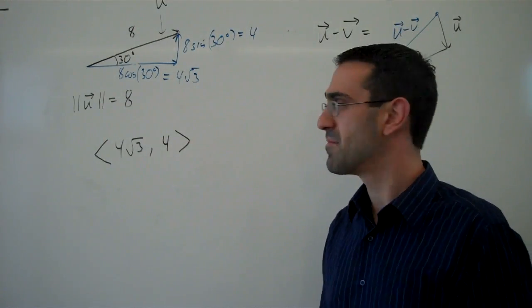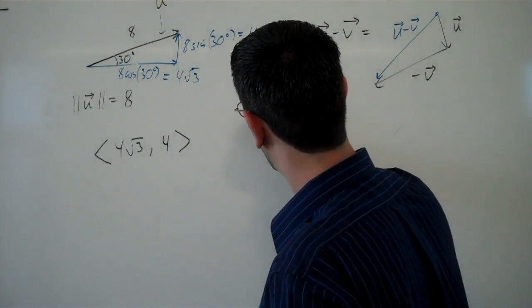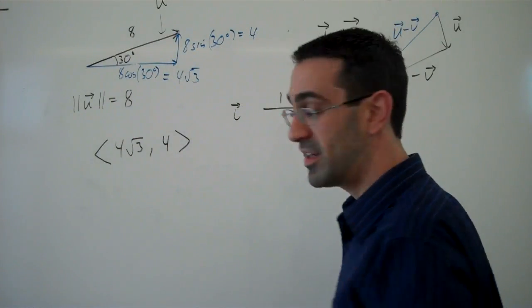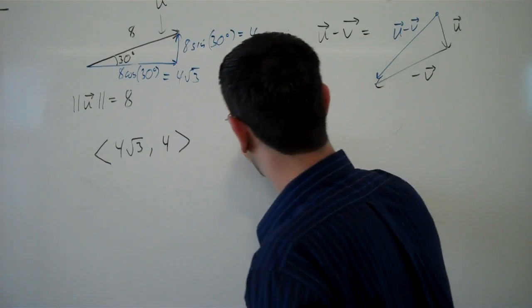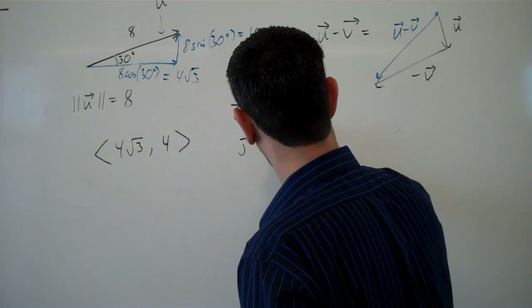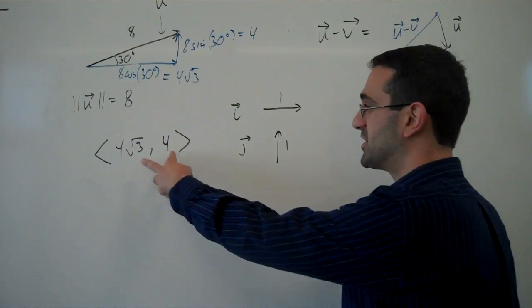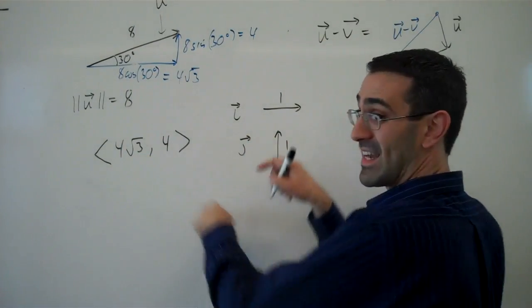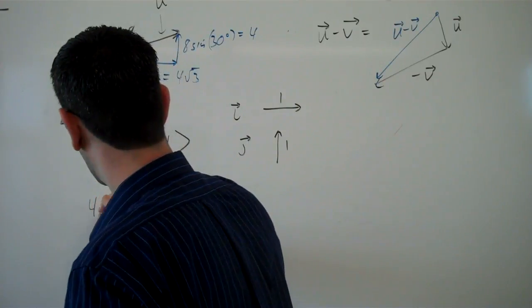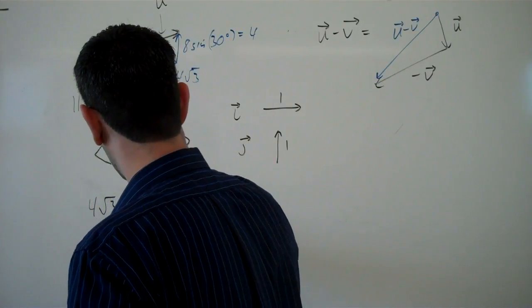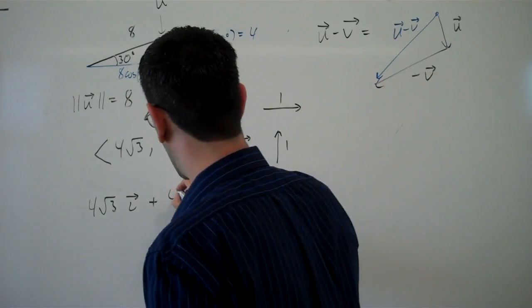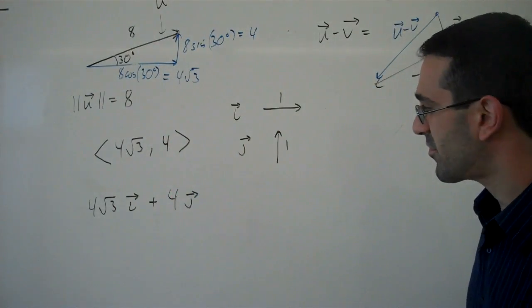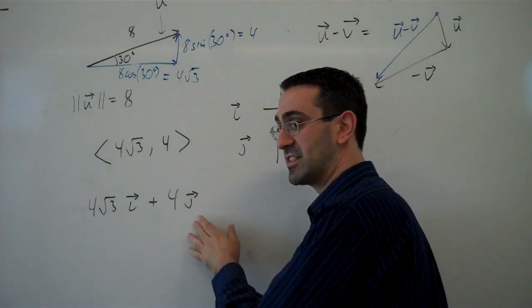Sometimes you'll also see i and j used, where i vector is the vector with length 1 pointing to the right, and the vector j is the vector pointing up with length 1. And so we could represent this as 4 root 3 in the i direction, so 4 root 3 i, and 4 in the up direction, so 4 j. And then we've represented this vector using i's and j's.